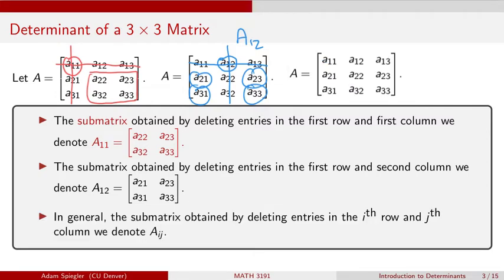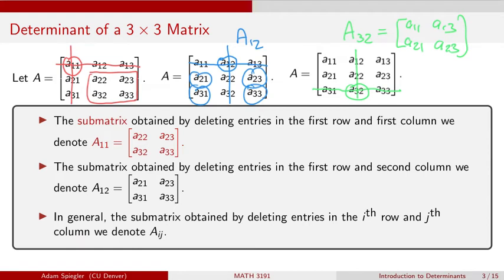We can do this for any general AIJ entry in matrix A. For example, to find submatrix A32, I come to element A32 in matrix A, cross off all entries in the same row — the third row — and all entries in the same column — the second column. The remaining entries set up submatrix A32, which in this case would have a first column of A11, A21, and a second column of A13, A23.